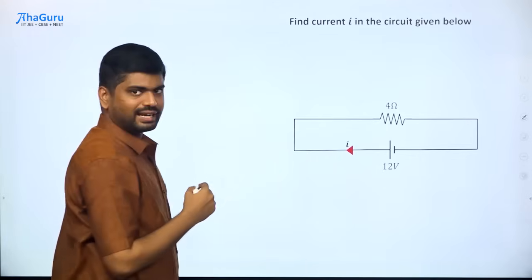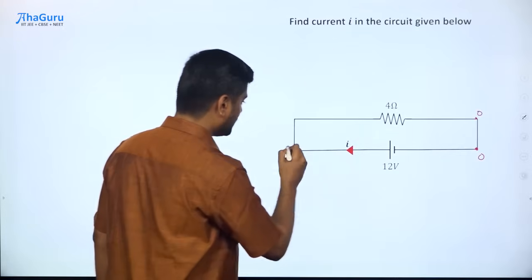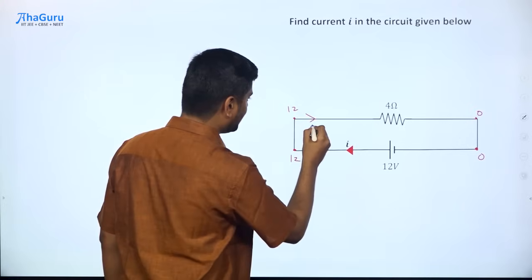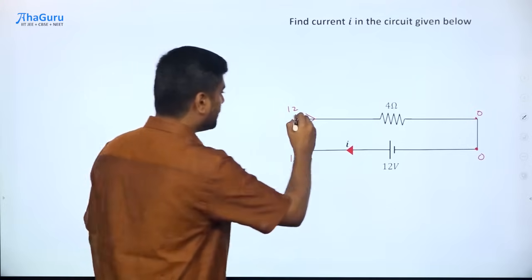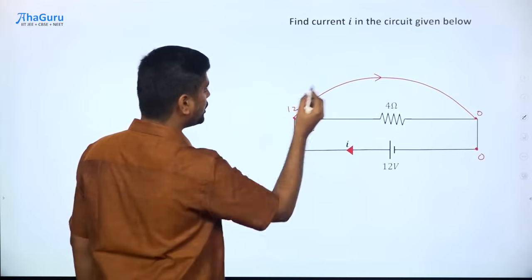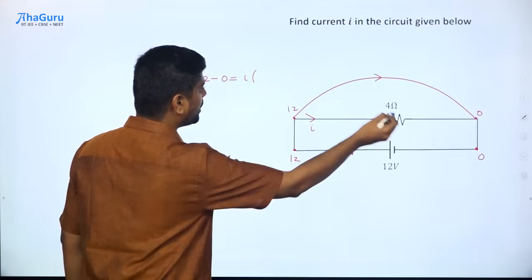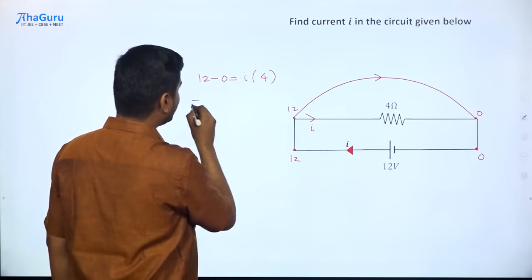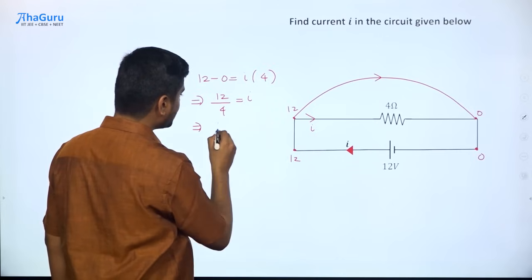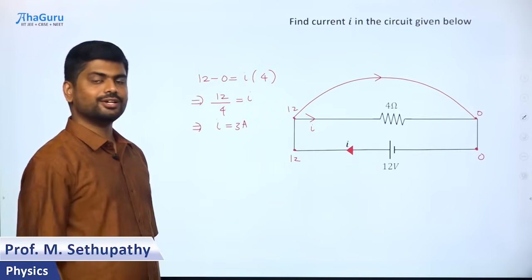Now the problem is fairly easy to solve. If the potential here is 0, the potential on the other side is 12 volts. Assuming a current I in this direction, the potential drop along the direction of current is IR, and 12 minus 0 equals I times 4 ohms. So we get I equals 12 divided by 4, which gives I equals 3 amperes — and 3 amperes is the right answer.